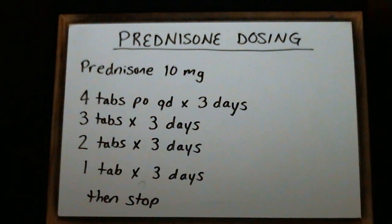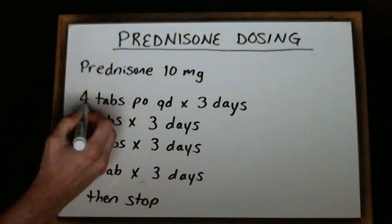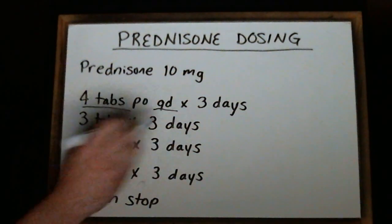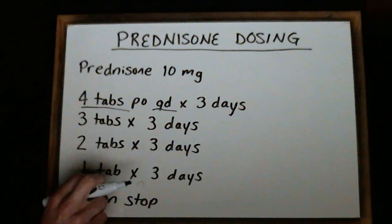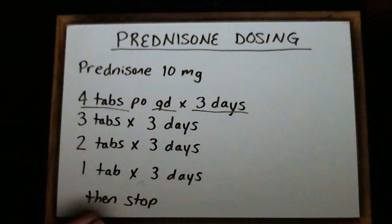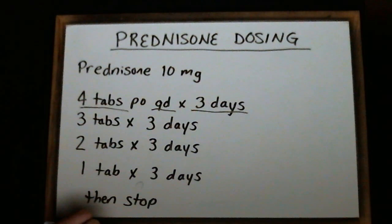There are three parts to each line in the prescription. You'll notice that we have the total number of tablets, a frequency — in this case QD, so once a day — and then instructions for how many days we're to use that dose of the medication. In this case, it's three days for each line. So we want to multiply the number of tablets by the frequency and then multiply by the number of days.